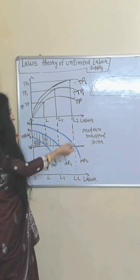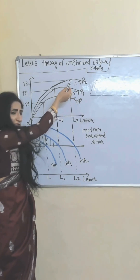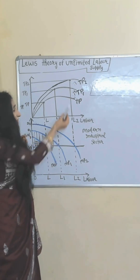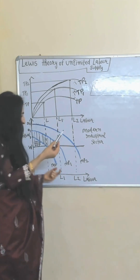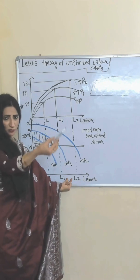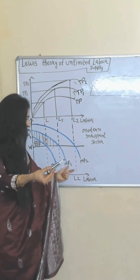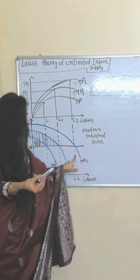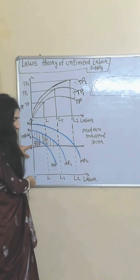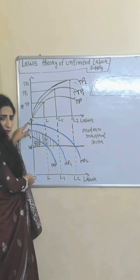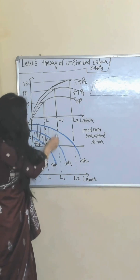This whole part is now called the profit of the modern industrial sector. With this profit they accumulate capital, and as their output increases, more labor L1 to L2 is transferred from agriculture to the modern industrial sector. Their marginal product increases, so the marginal product curve shifts forward again.